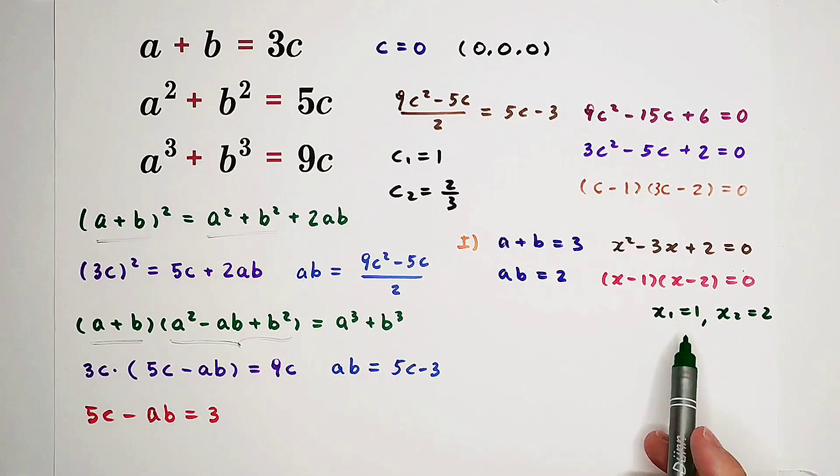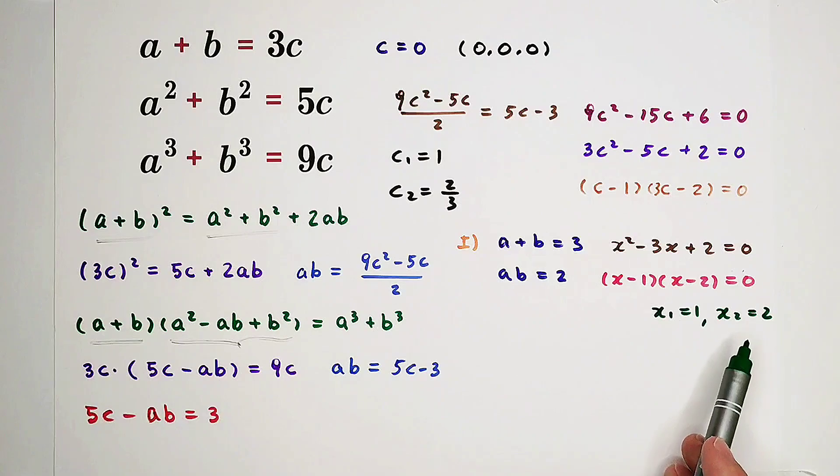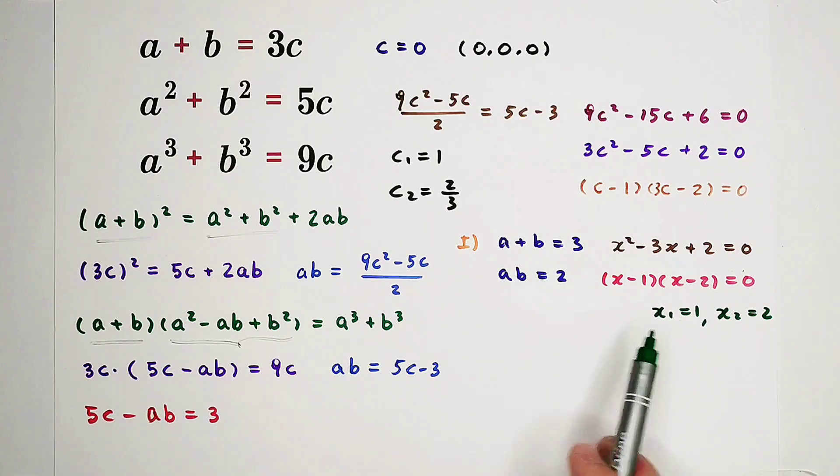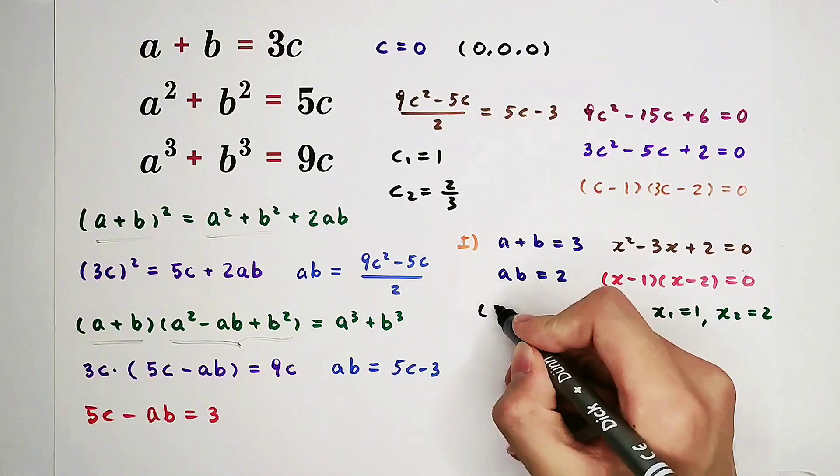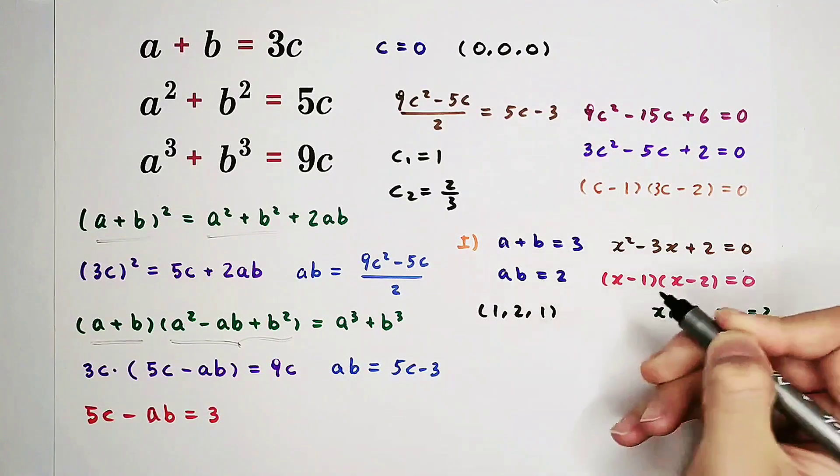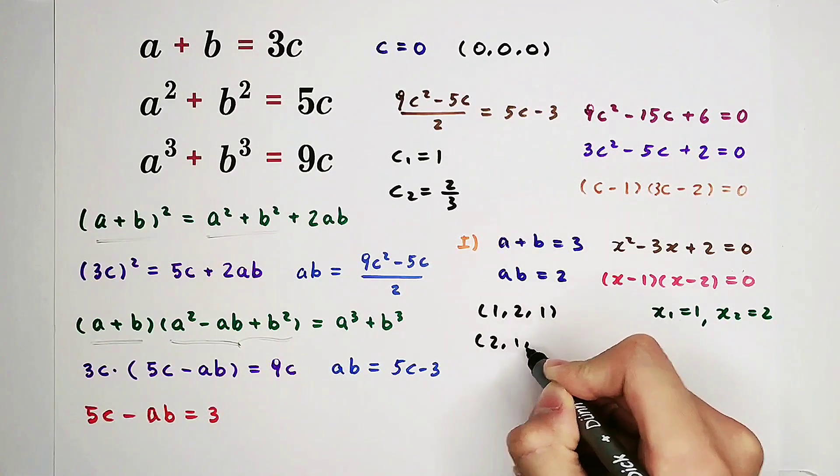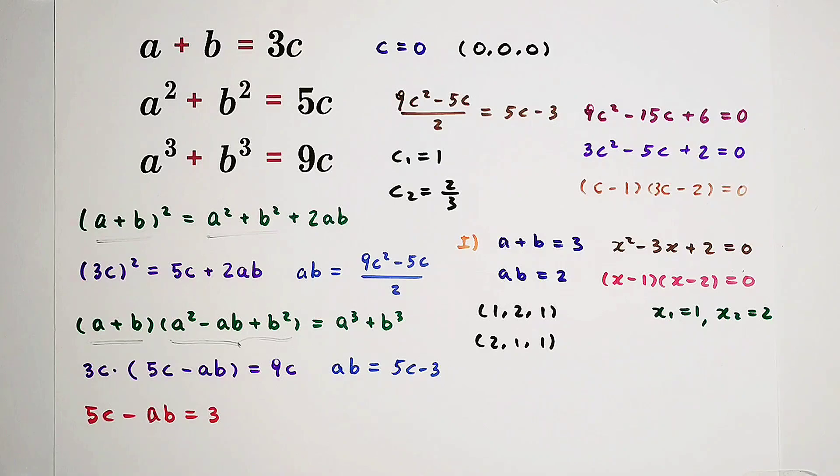So that means a equals 1, then b equals 2. If a equals 2, then b equals 1. And in this case, c is 1. Here, we will acquire two other pairs of solutions. a, b, c, they are 1, 2, 1 or 2, 1, 1.